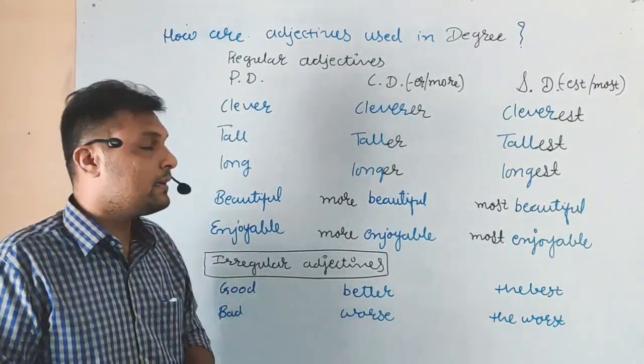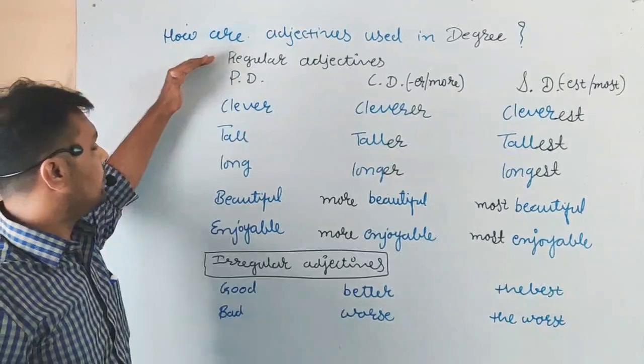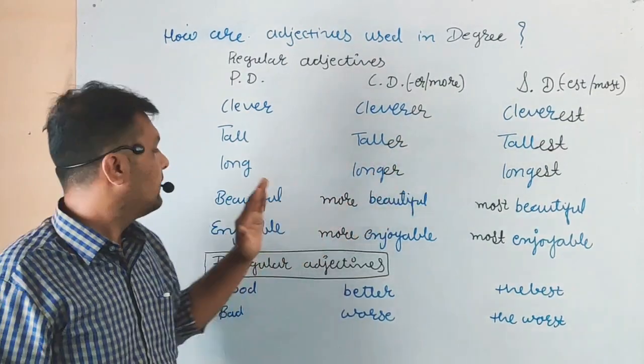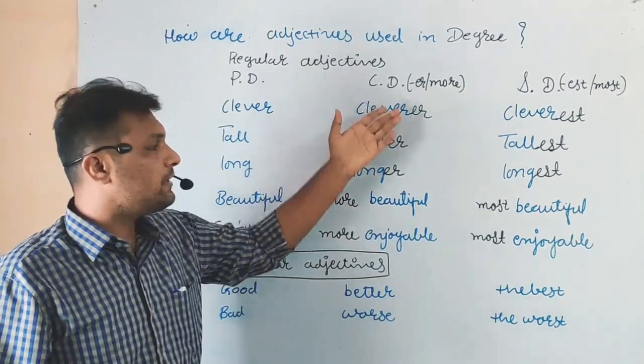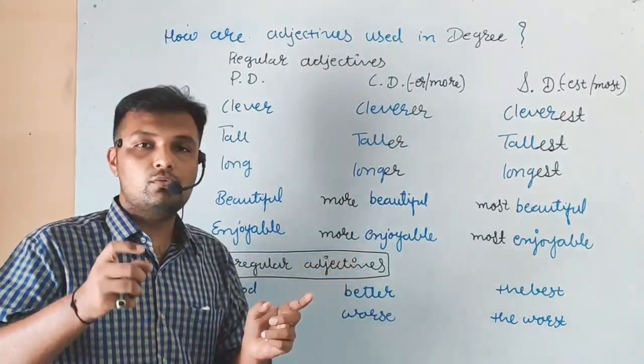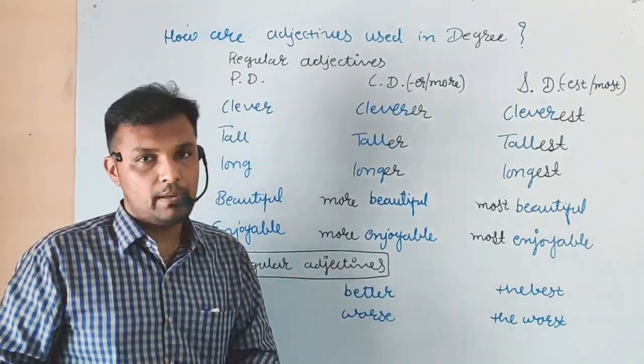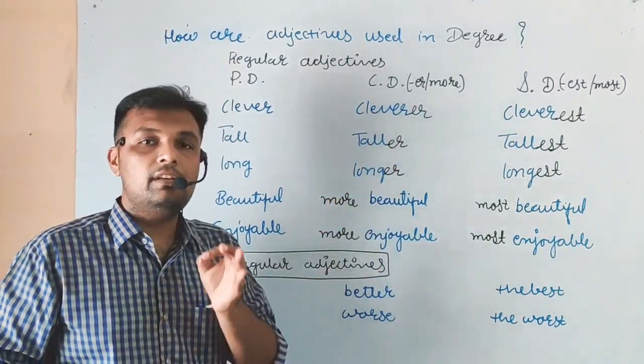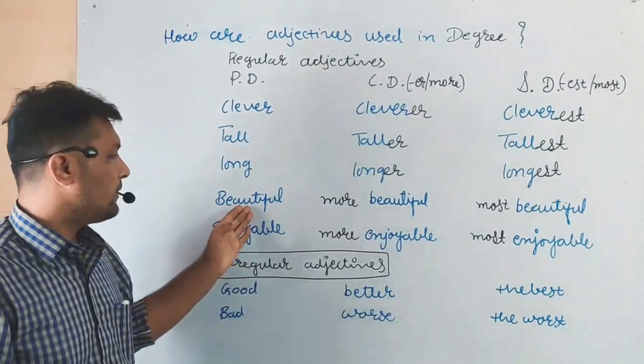There are two types of adjectives: Regular adjectives and Irregular adjectives. In regular adjectives: Clever, Cleverer, Cleverest. Tall, Taller, Tallest. Long, Longer, Longest. Sometimes we use more to make comparative degree and most to make superlative degree. If there are two syllables or more than two syllables in the spelling, we have to use more before the adjective to make comparative degree and most to make superlative degree. For example: Beautiful, More beautiful, Most beautiful. Enjoyable, More enjoyable, Most enjoyable.